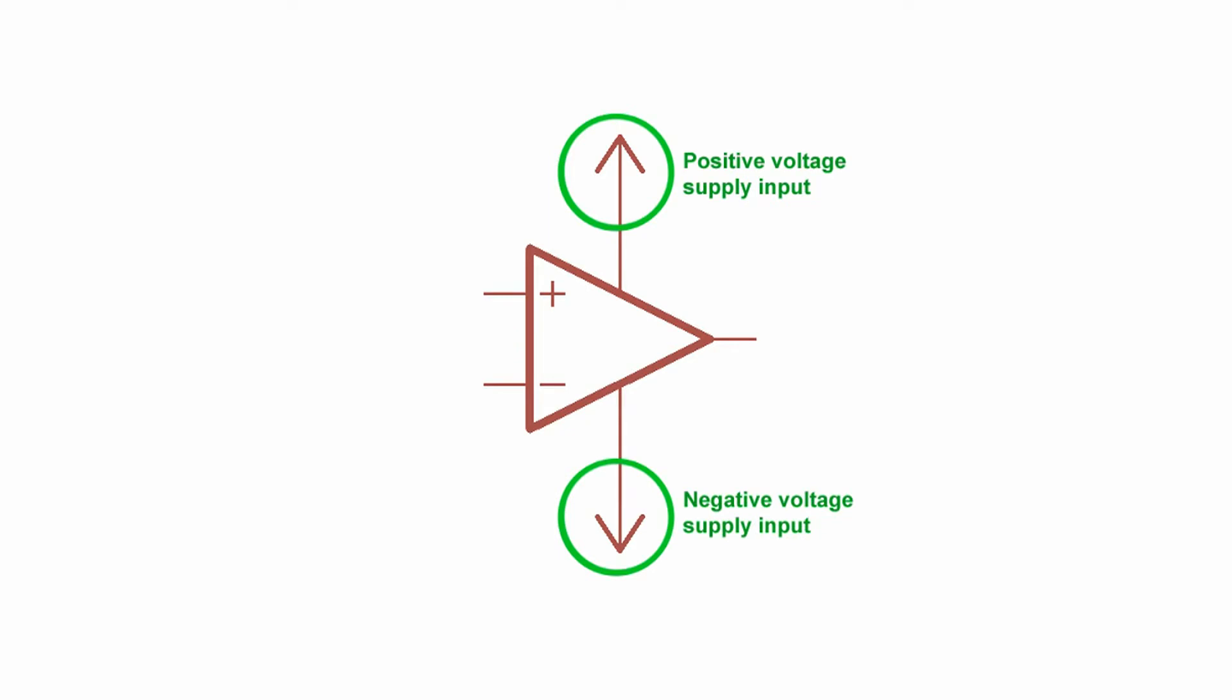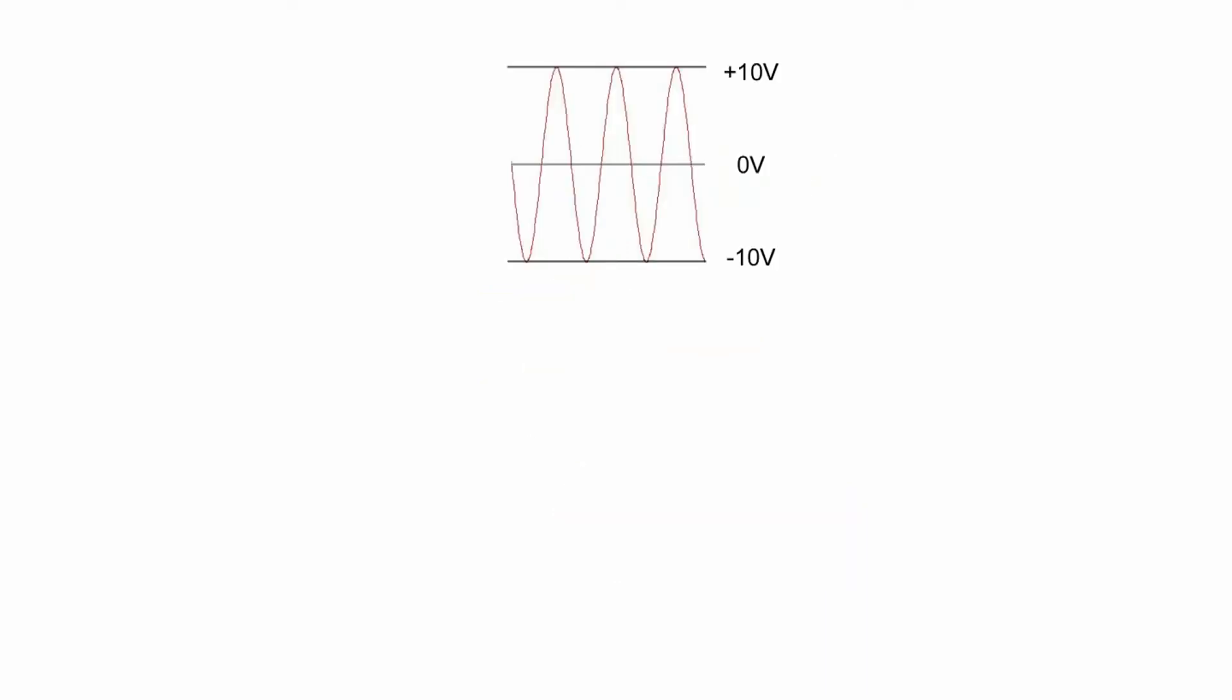Now these pins are the positive and negative voltage supplies for the op-amp. These voltage supplies need to be at least a volt or two more than the output voltage you are expecting. For example, let's say your output wave is expected to be plus 10 volts to minus 10 volts. You'd probably want to power your op-amp with plus 12 volts and minus 12 volts.